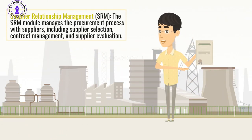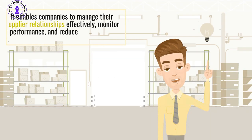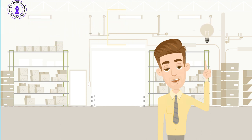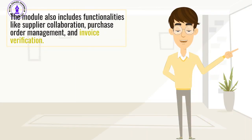Supplier Relationship Management (SRM): The SRM module manages the procurement process with suppliers, including supplier selection, contract management, and supplier evaluation. It enables companies to manage their supplier relationships effectively, monitor their supplier performance, and reduce procurement costs. The module also includes functionalities like supplier collaboration, purchase order management, and invoice verification.